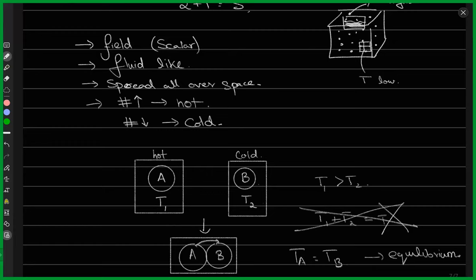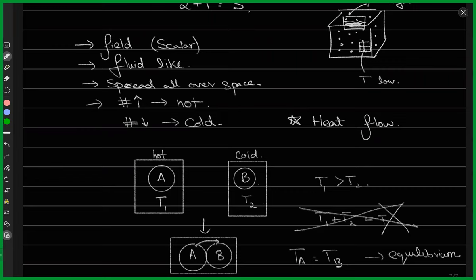The key point is: heat flows. There is no opposite of heat. If heat flows out of some body, that body becomes cold. If heat flows into a body, that body becomes hot.